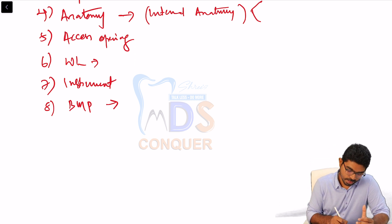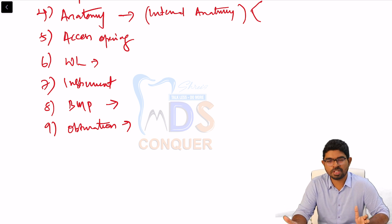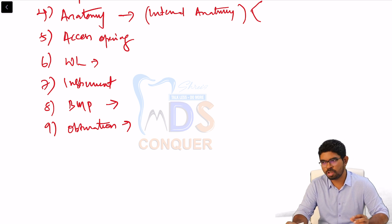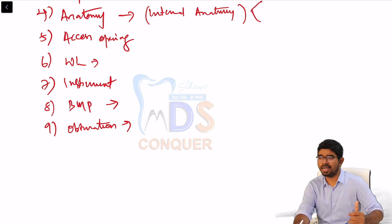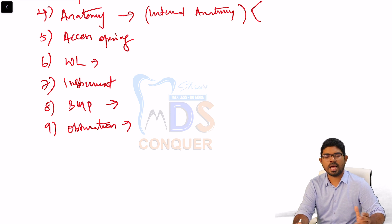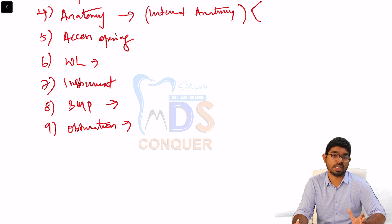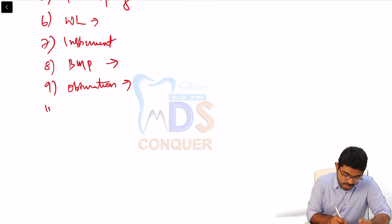The next topic is obturation. Know lateral condensation, vertical compaction, thermal-related obturation techniques, and thermomechanical obturation. Know devices like Obtura I and Obtura II and up to what temperature they are heated. For example, the mode of obturation in post and core cases is the Chicago technique, also called the sectional obturation technique. Objectives of obturation and apical seal are very important.